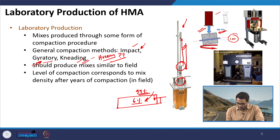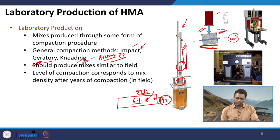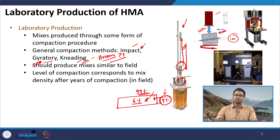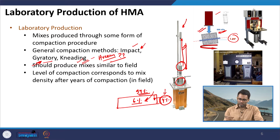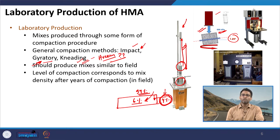Let us say the final stabilized air void reached is 4 percent — this is the mix we are going to produce in the laboratory. Students often ask: why are we producing the mix at 4 percent air void in the laboratory when in the field I get 6 to 8 percent? The reason is that our performance depends on the mix after it has undergone secondary compaction, so we are interested to produce the design mix that we will achieve in the field after years of compaction.